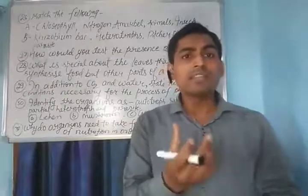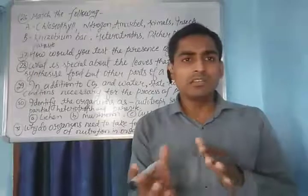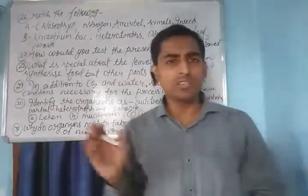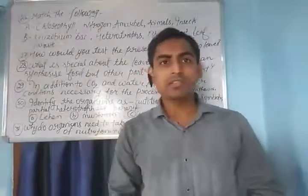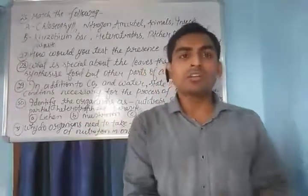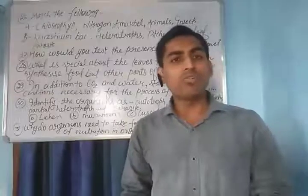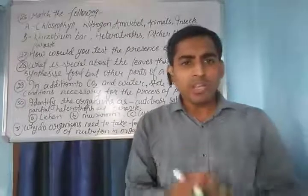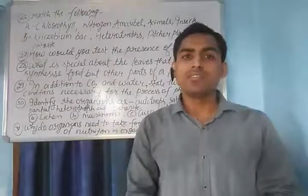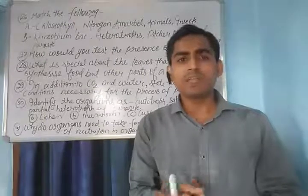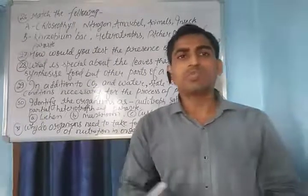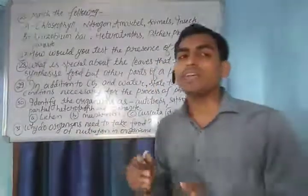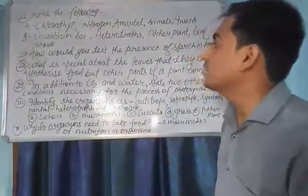Also, in leaves, stomata are present that help in the exchange of gases and the entrance of carbon dioxide for photosynthesis. But the other parts are not green and they do not have chlorophyll for photosynthesis. However, in newly growing plants, when stems or some branches are green, they also process photosynthesis. But according to the question, only leaves have chlorophyll and can synthesize food.